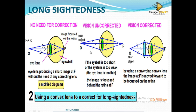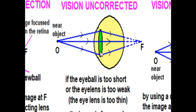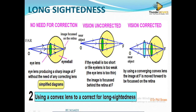Why can't long-sighted people see near objects? The eyeball is too short, so the image is formed behind the retina. The lens is too weak to refract the light to the retina. Because the beam from a near object is too big, it falls behind the retina, and the lens is too weak — it is too thin, less convex — so it has insufficient refracting power to bend the light to the retina.